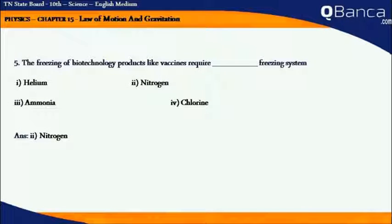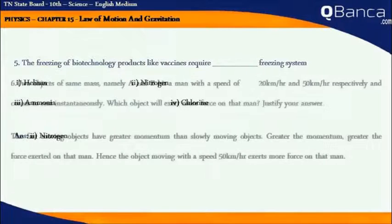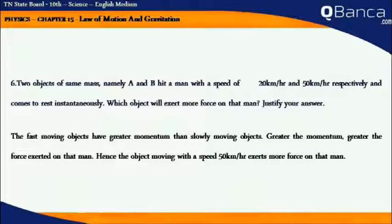The freezing of biotechnology products like vaccines require nitrogen freezing system. Two objects of same mass, namely A and B, hit a man with a speed of 20 km per hour and 50 km per hour respectively and come to rest instantaneously. Which object will exert more force on that man?